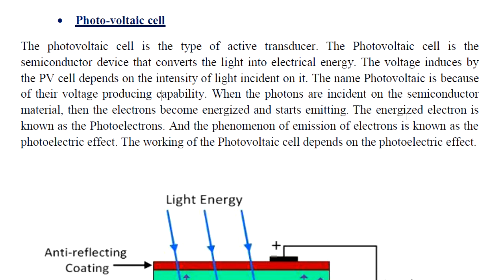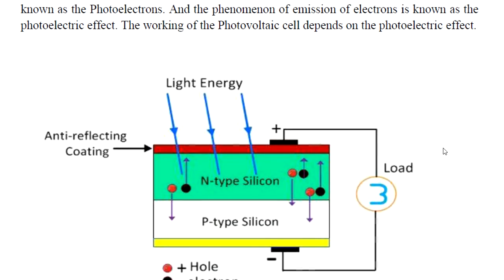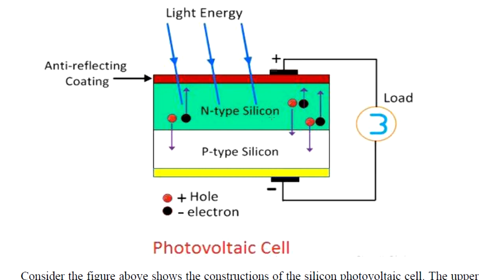When photons are incident on the semiconductor material, the electrons become energized. The energized electrons are known as photoelectrons. The photovoltaic cell absorbs light energy through its carrier material.